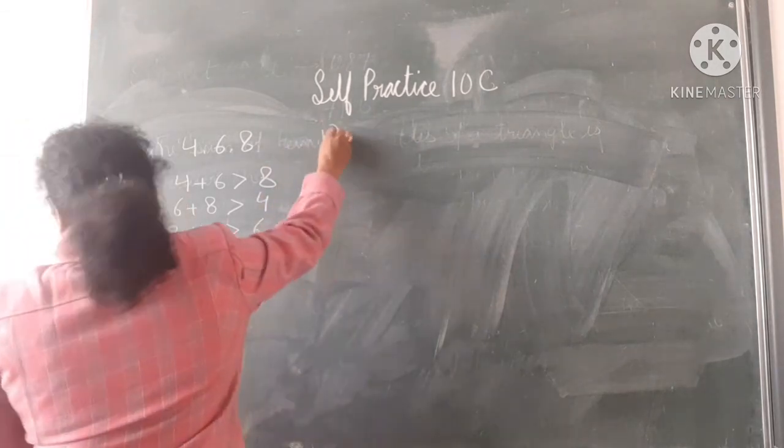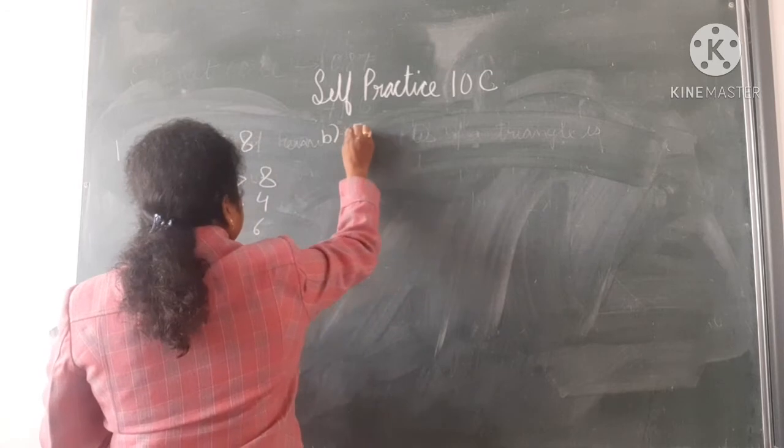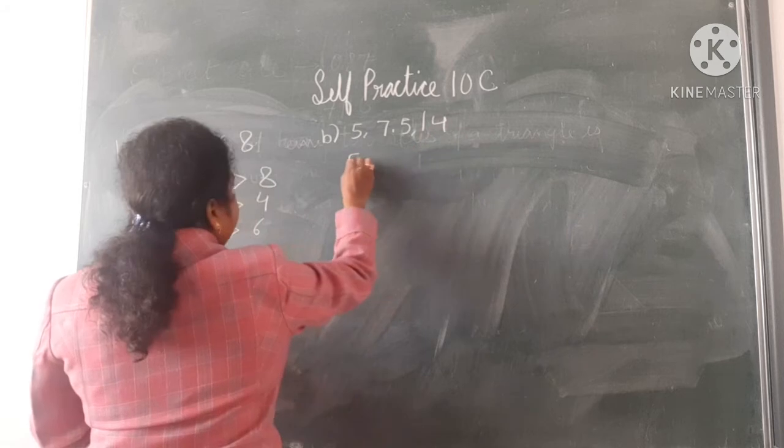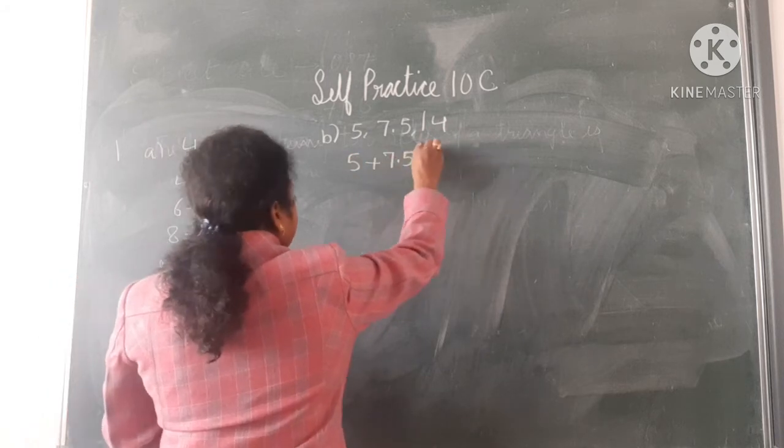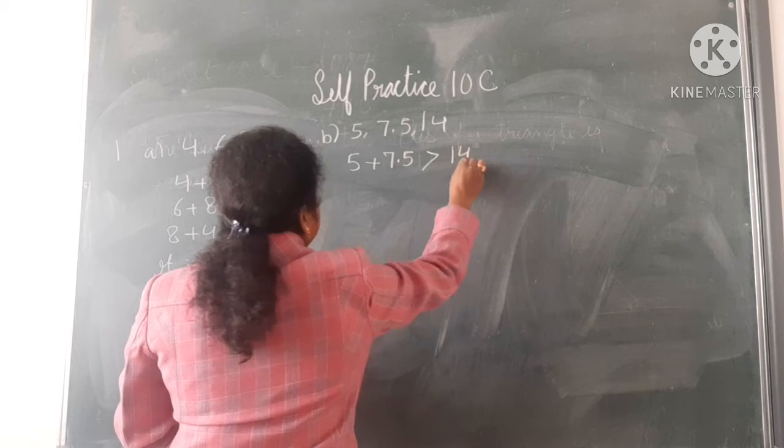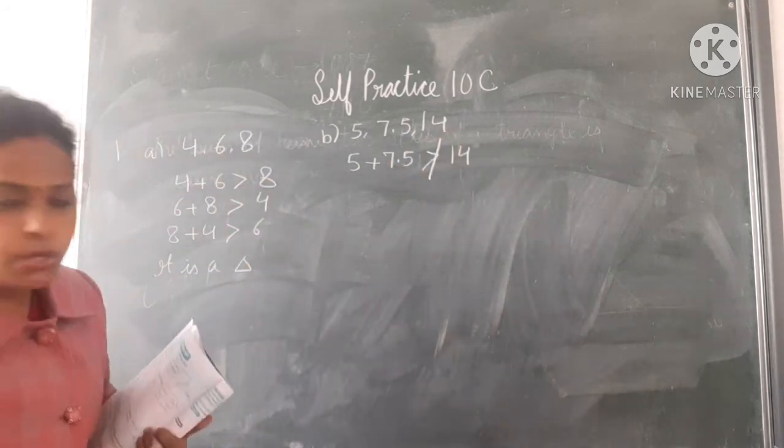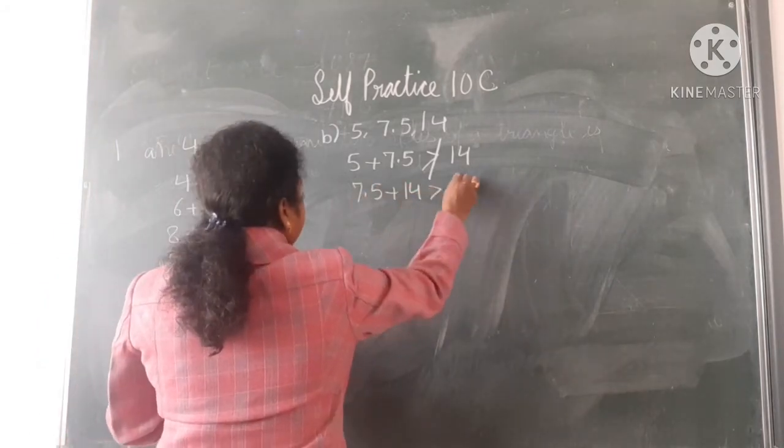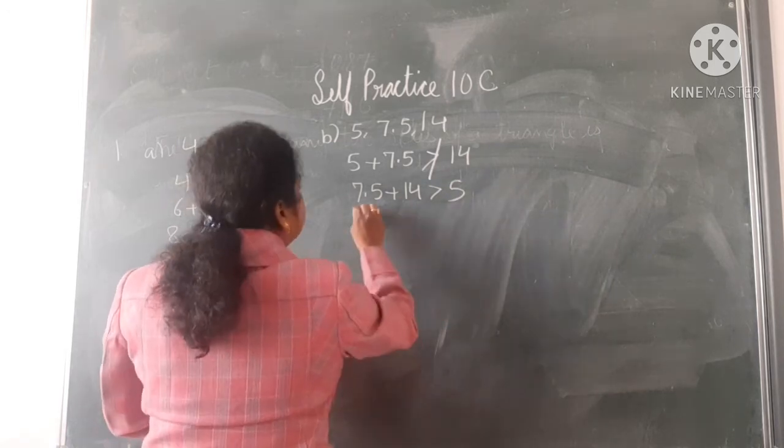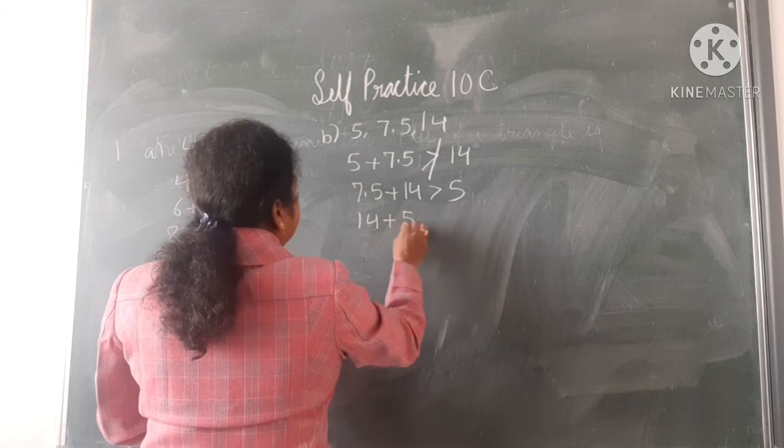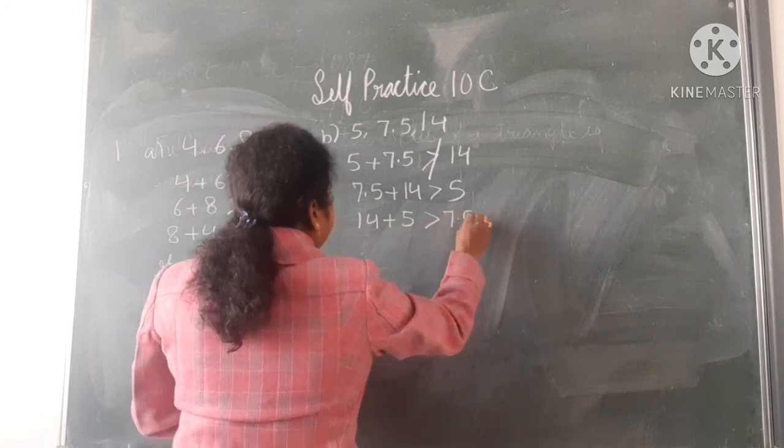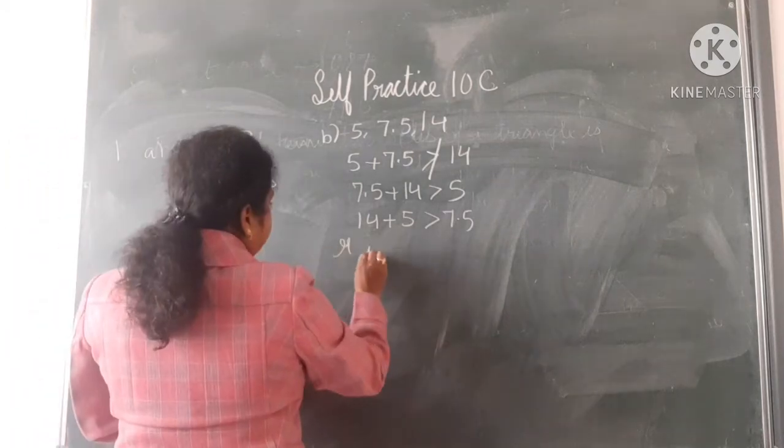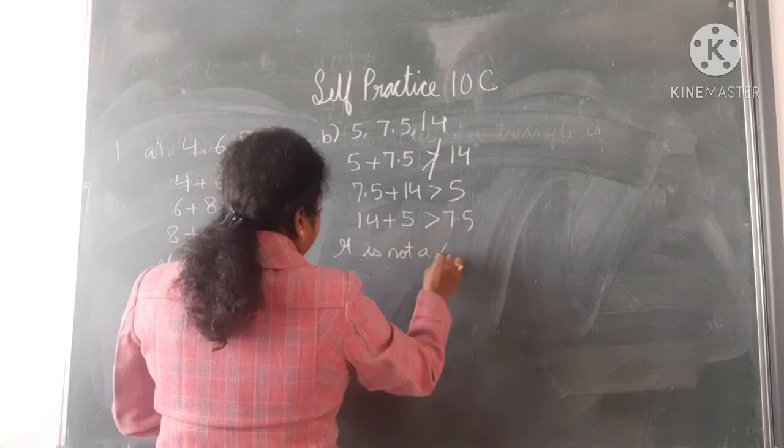First B part: 5, 7.5, and 14. 5 plus 7.5, it is not. And 7.5 plus 14 is greater than 5, and 14 plus 5 is greater than 7.5. But here at one position it is not getting, so it is not a triangle.